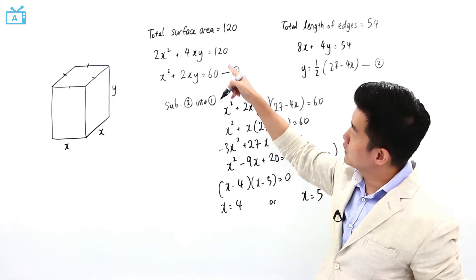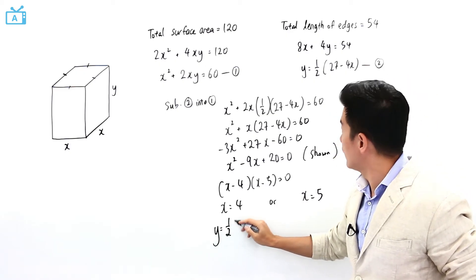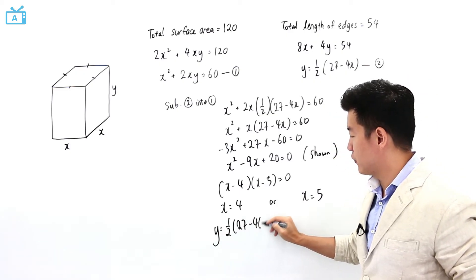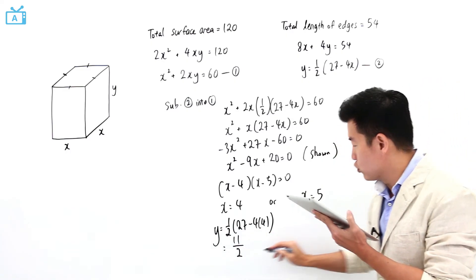When x is equal to 4, if I were to sub it back into this equation over here, that means y is going to be equal to half of 27 minus 4 times 4. Y is going to be equal to 11 over 2.